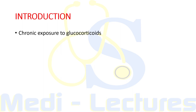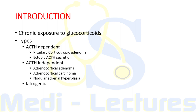Cushing syndrome is basically a constellation of clinical features that result from chronic exposure to excess glucocorticoids. This excess can be due to any etiology. Cushing syndrome can be ACTH dependent — examples include pituitary corticotropic adenoma or ectopic ACTH secretion by a non-pituitary tumor — or ACTH independent, in which the adrenal glands are hyper-functioning without ACTH.